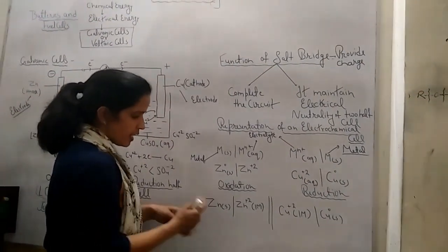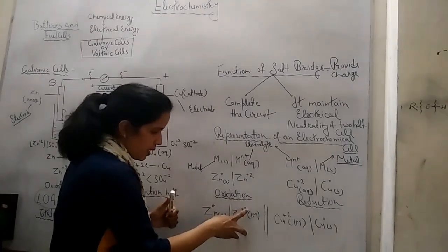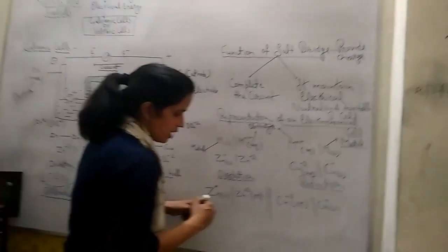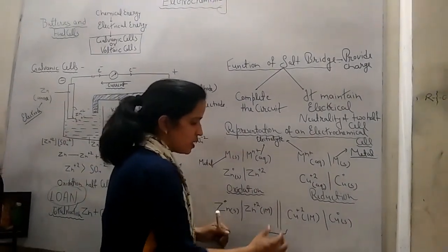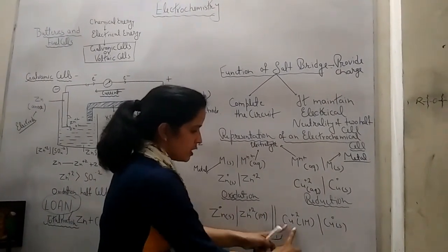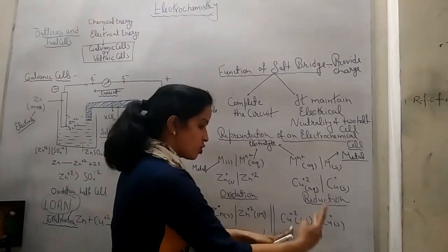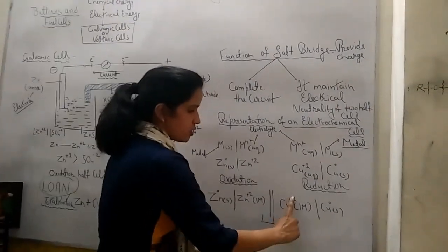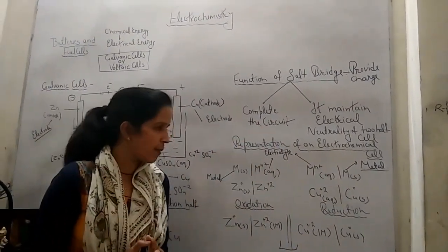Observe the combined representation: Zn in the zero oxidation state goes to plus 2, so oxidation occurs — represented by one single line. Then two lines represent the salt bridge, showing the two containers are connected by it. Cu²⁺ comes from the electrolyte, takes 2 electrons and becomes Cu solid — plus 2 to zero. This is the full representation of the electrochemical cell.